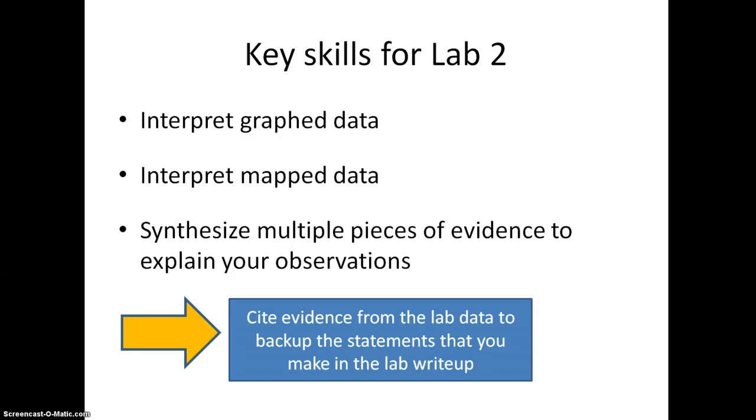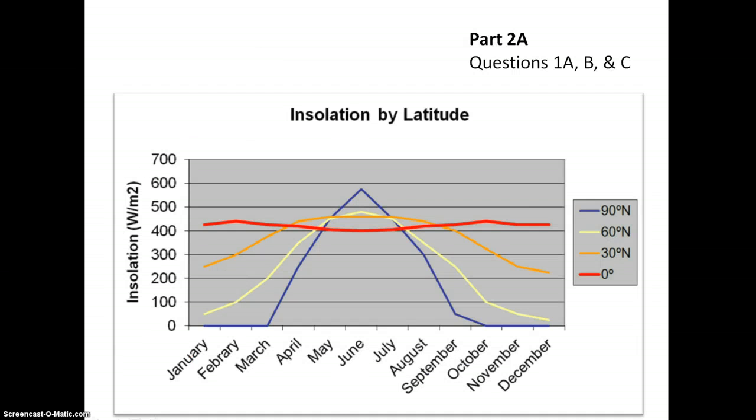Okay, let's look at the lab. In part 2a, you examine insolation with graphs. The x-axis, that's the horizontal one, shows the months of the year. And the y-axis, that's the vertical one, shows the insolation in watts per meter squared.